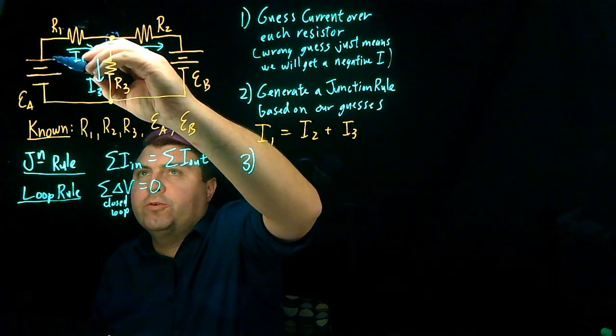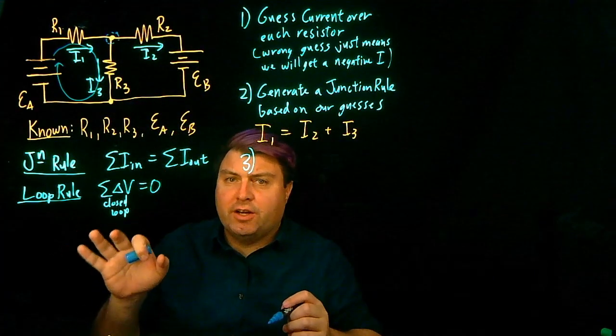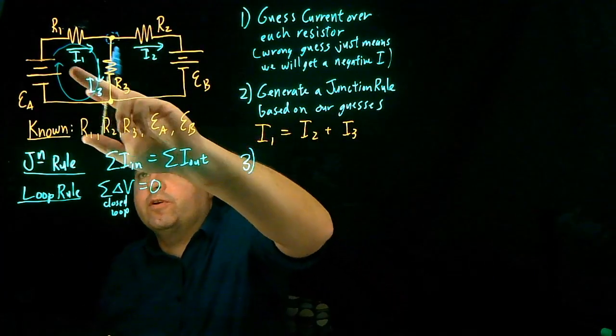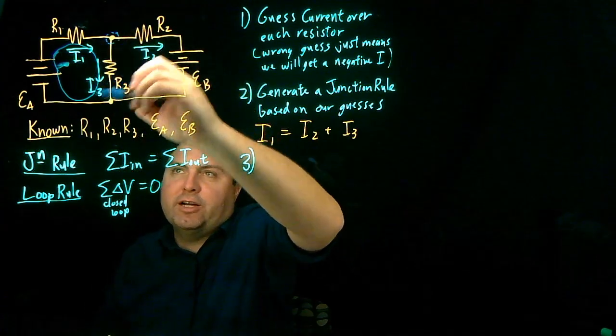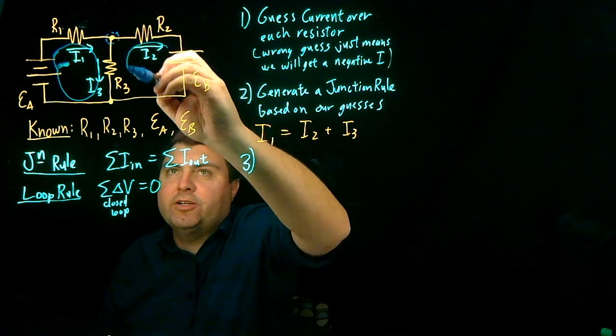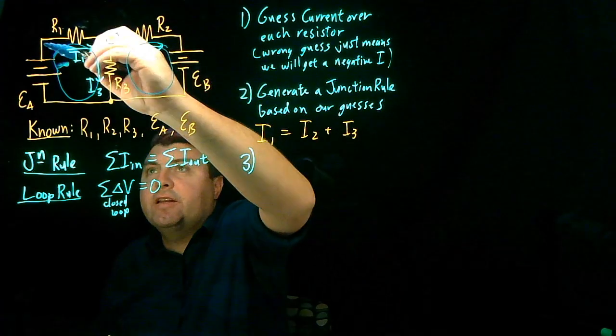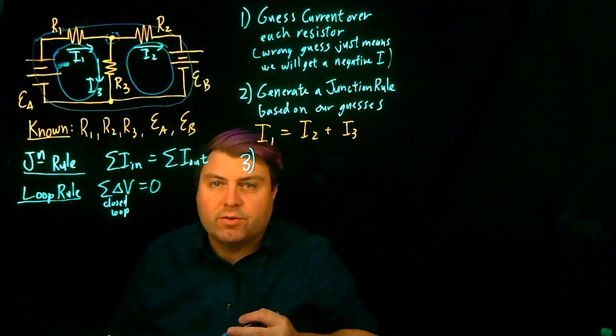We could consider a loop rule through this left section, and we could consider a loop rule of some direction either counterclockwise or clockwise of this left thing, and a loop rule clockwise or counterclockwise of this whole thing. We only need two of them, and in fact the third one is going to hurt us.